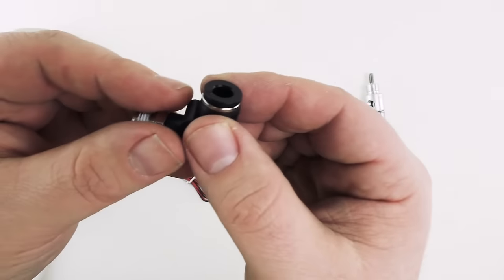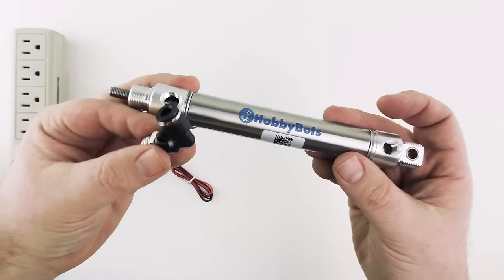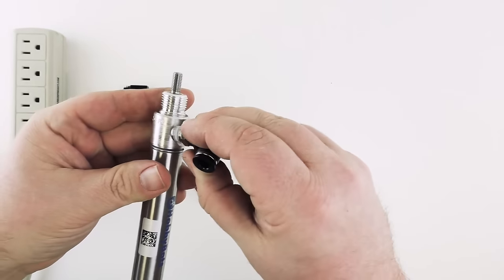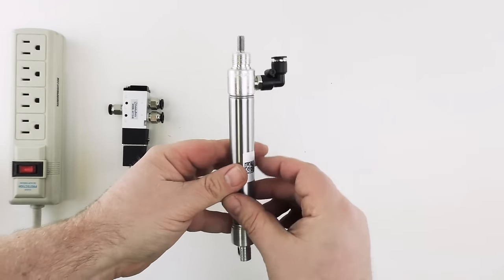So we have quarter inch air line here, quarter inch air line here. And these fittings are just going to install into the two air ports on our cylinder. Alright now we have our elbows installed into our cylinder.